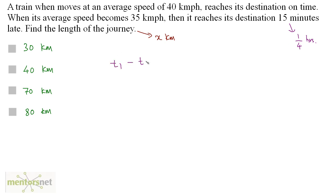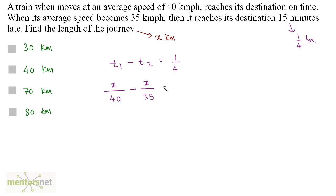So t1 minus t2 equals 1/4. t1 is the time at 40 km/h, which is x/40. t2 is the time at 35 km/h, which is x/35. So x/40 minus x/35 equals 1/4.